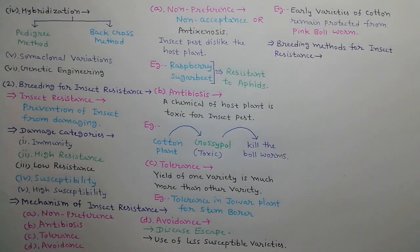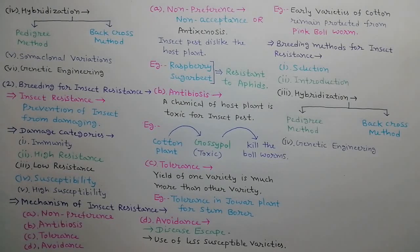We can use various breeding methods for insect resistance such as selection, introduction, hybridization in which pedigree and backcross methods are used, and genetic engineering.